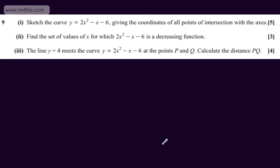This is question number 9. In the first part, for five marks, we're asked to sketch the curve y is equal to 2x squared minus x minus 6, giving the coordinates of all points of intersection with the axes.